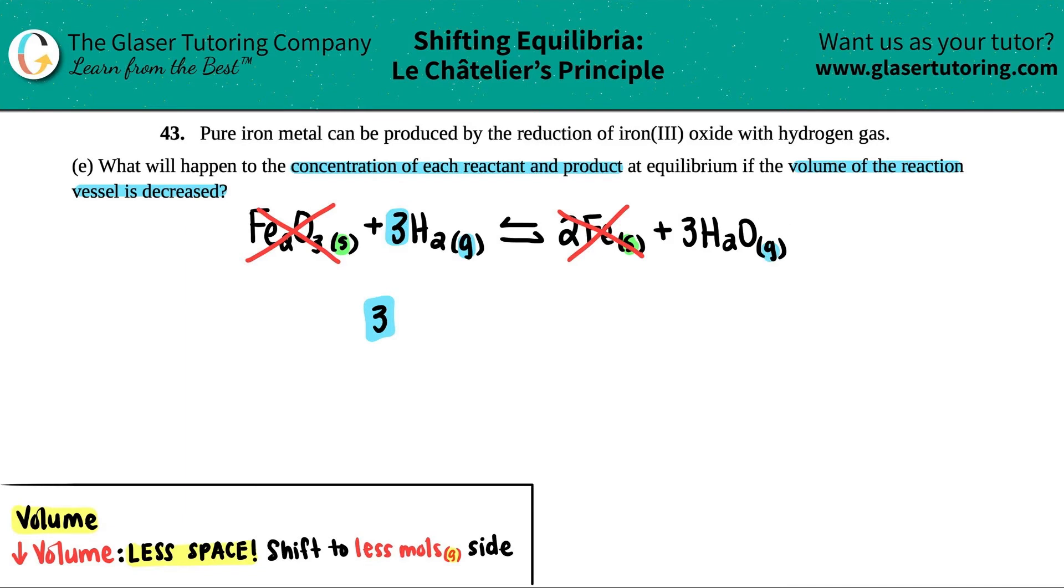And then for the H2O, I have three moles of all my gases on my product side. But wait a second - three and three, there's no side that is less. The number is the same.